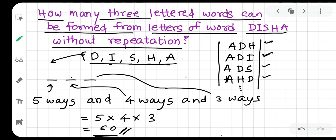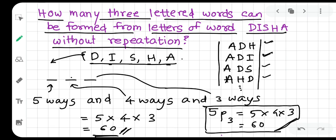Let's go back to the problem we solved: forming a 3-letter word from DISHA. Actually, this question is simply that you have 5 things and you need to find permutations of 3 from them. The method is the same, so you can also write the answer using permutation notation.